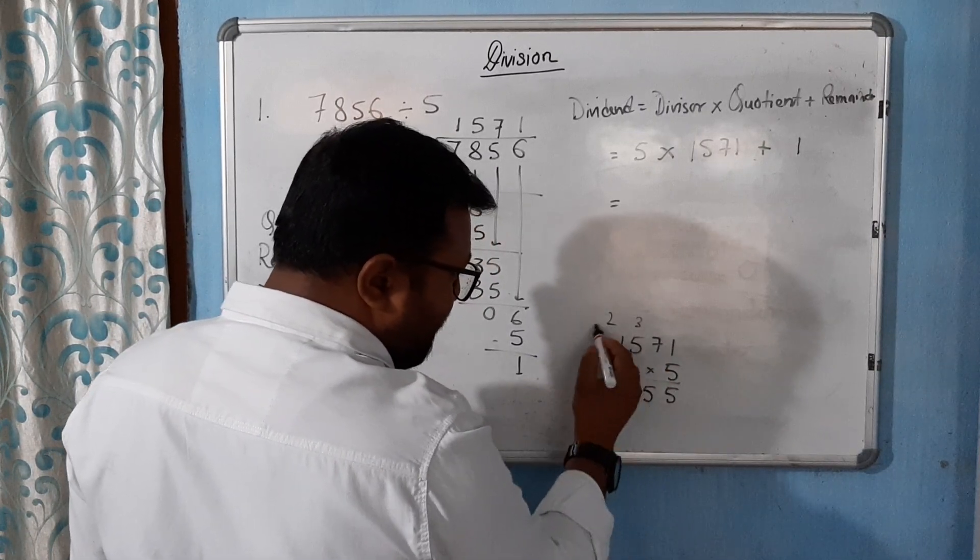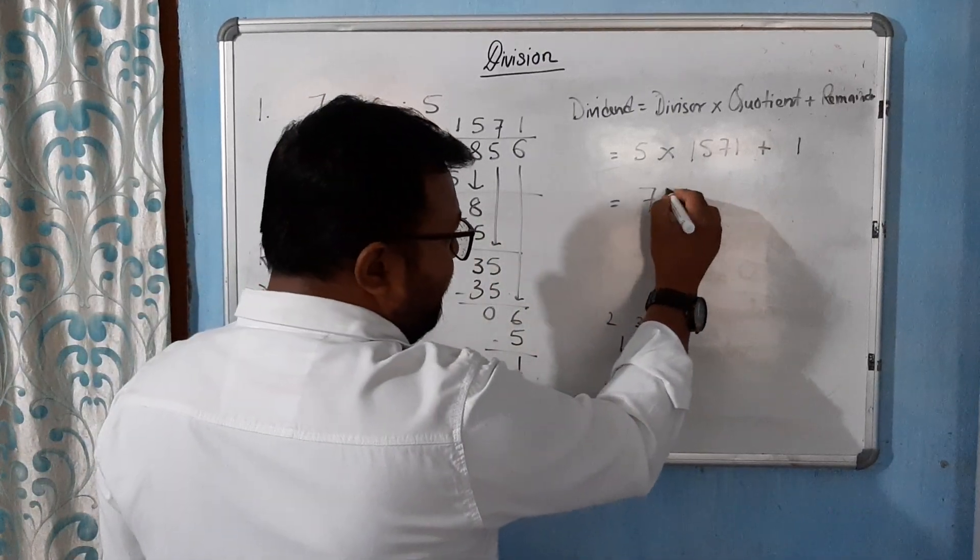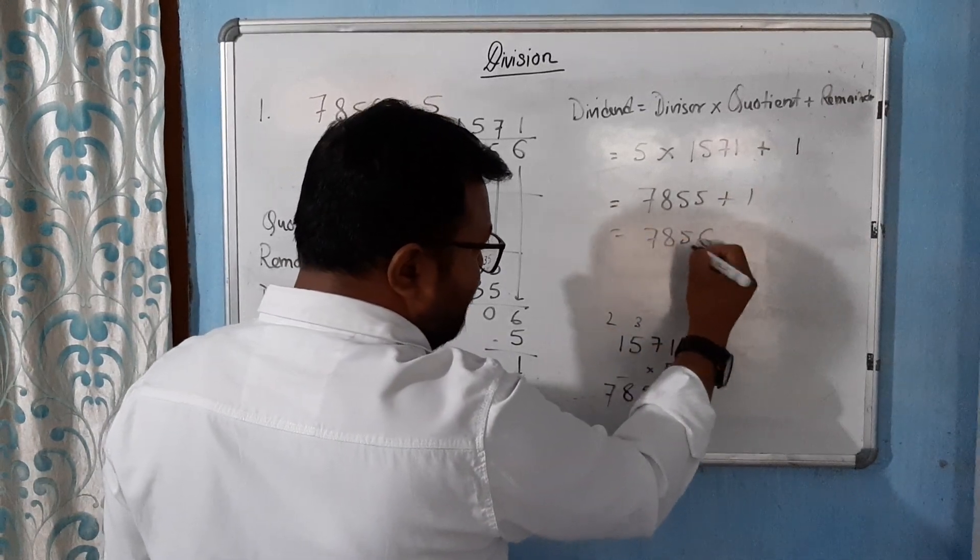Carry 2, 5 times 1 is 5 plus 2 is 7. 7855. 7855 plus 1 equal to how much? 7856.